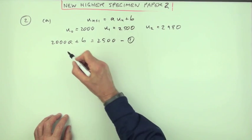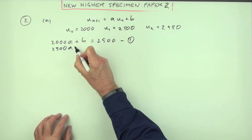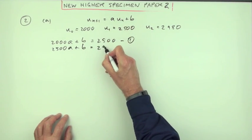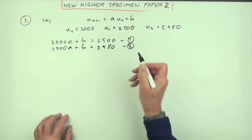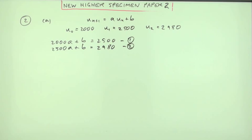And if you start with 2,500 and multiply it by A and add on B, you should get the following year, which is 2,980. There's another equation. Now you've got a pair of simultaneous equations to solve.